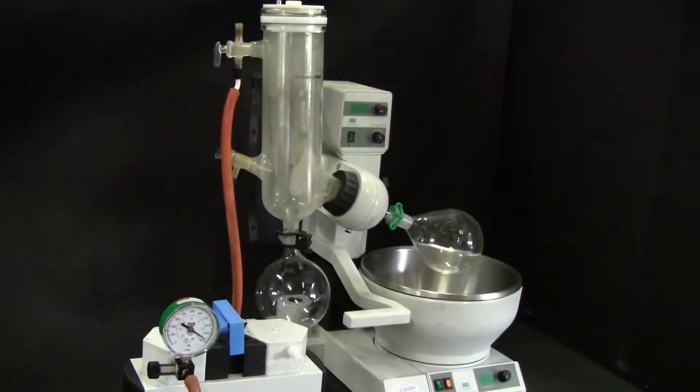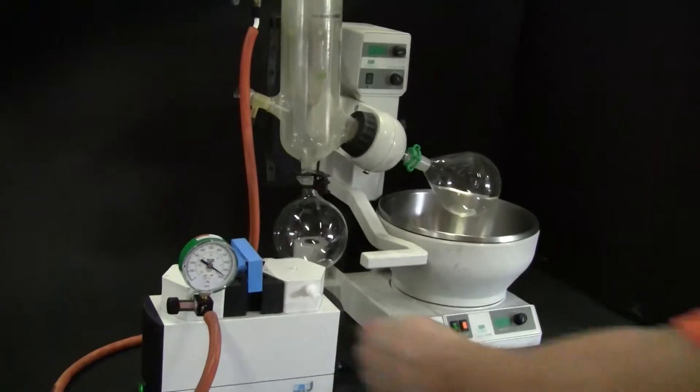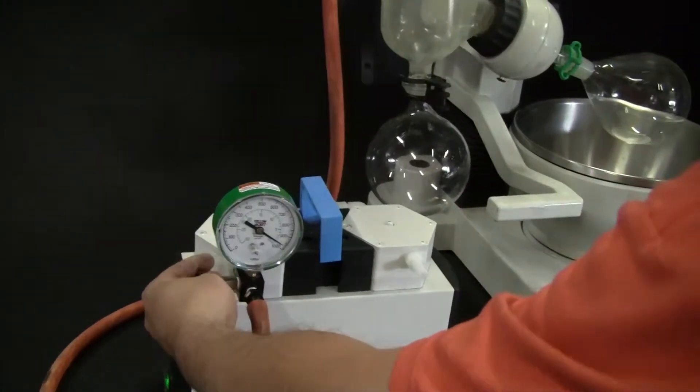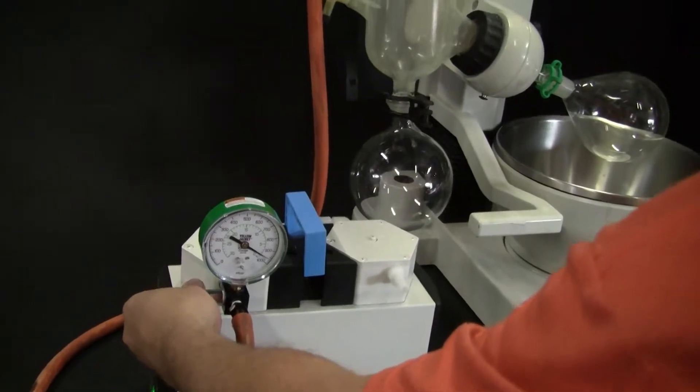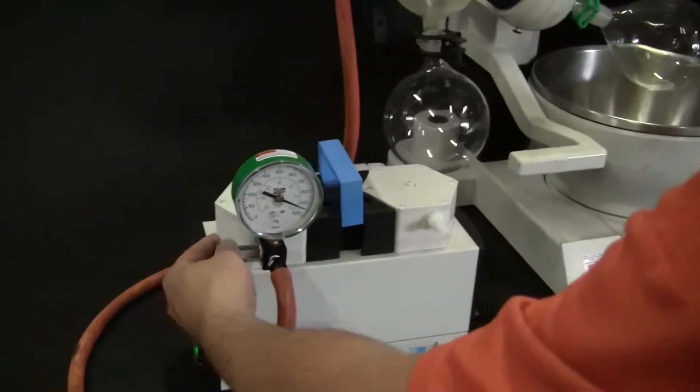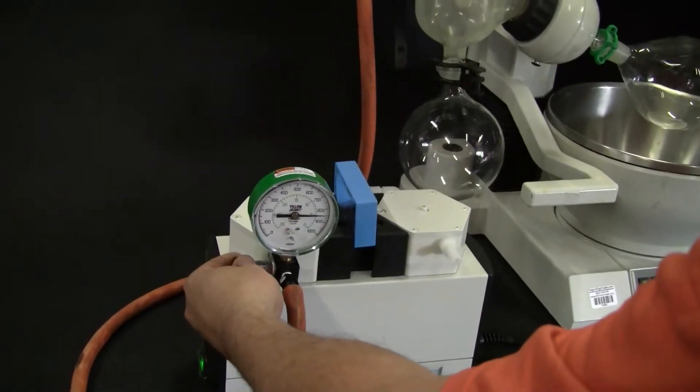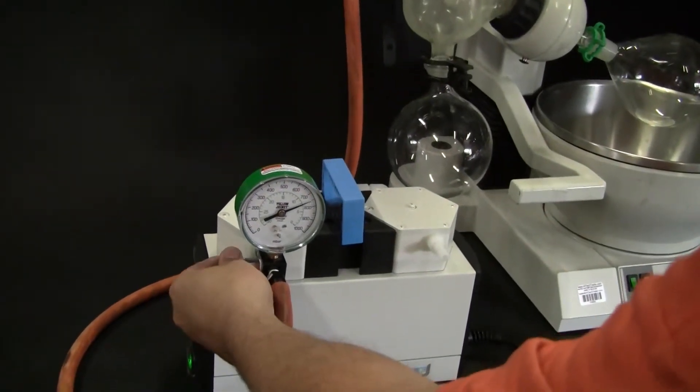And what I'm going to demonstrate now is, if I just want a little vacuum, I can dial that in. I'm going to try to get it down to about 700. Gauges in millibars, it's quite nice.